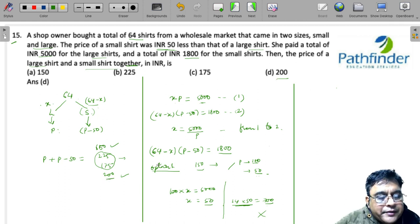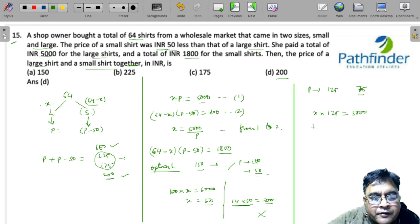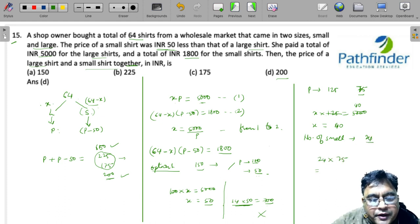So what else can be your answer? The sum of the two prices can be 200, which means the price of large shirt can be 125 and price of small shirt can be 75. Now what should we do? We just say X into 125 is 5000, which gives X equals 40. What does that mean? Number of small shirts must be 64 minus 40, that is 24. And just multiply 24 into 75.